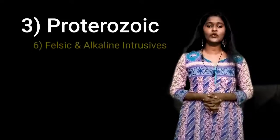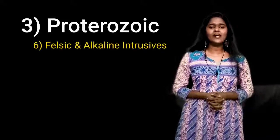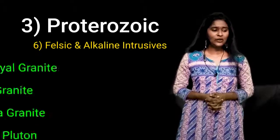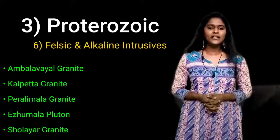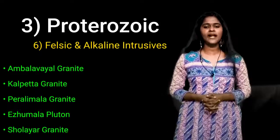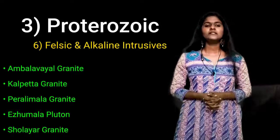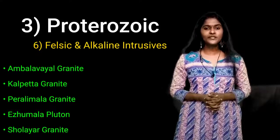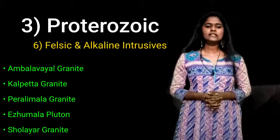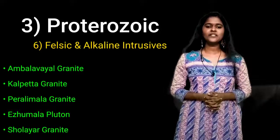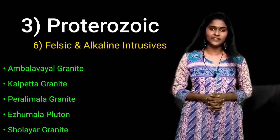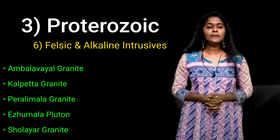The final and sixth category of Proterozoic Eon is the Felsic and Alkaline Intrusives. It mainly includes nine subtypes. First, Ambalavayal granite — it is an oval-shaped granite covering 50 square kilometers. Second, Kalpetta granite — it is also an oval-shaped intrusive covering 44 square kilometers. Third, Peralimala granite — it is an east-west intrusive body with 15-kilometer length and 3-kilometer width.